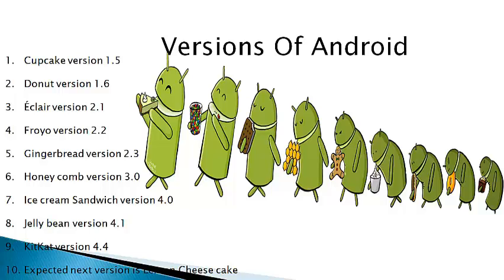The first version is 1.5 Cupcake, then 1.6 Donut, 2.1 and 2.2 is Froyo, 2.3 is Gingerbread, version 3 is Honeycomb, version 4 is Ice Cream Sandwich, 4.1 is Jelly Bean, 4.4 is KitKat, and the expected next version is Lemon Cheesecake.